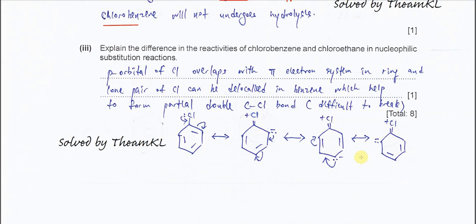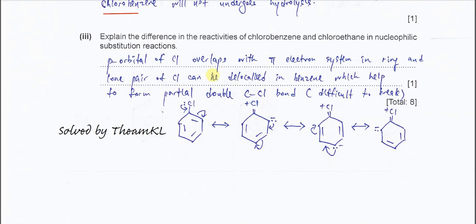Part three: Explain the difference in the reactivities of chlorobenzene and chloroethane in this nucleophilic substitution reaction. So why is chlorobenzene not that reactive and not able to react with water? It's because of the bonding. The C-Cl bond is actually strong. Why? Because the p orbital of the chlorine overlaps with the pi electron system in the benzene ring, and the lone pair—the lone pair on the chlorine can delocalize into the benzene ring.